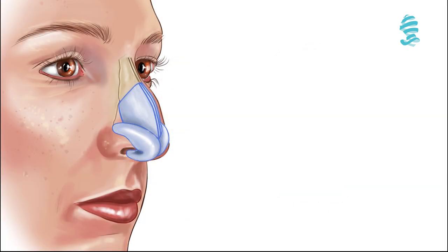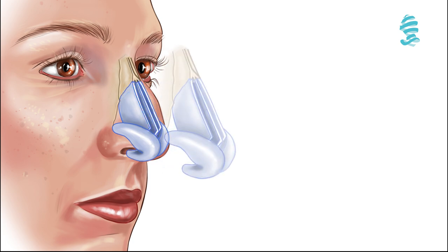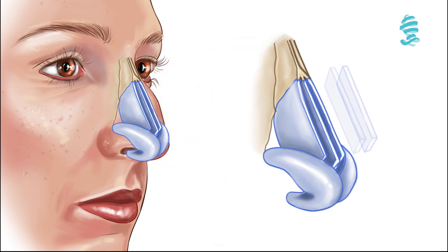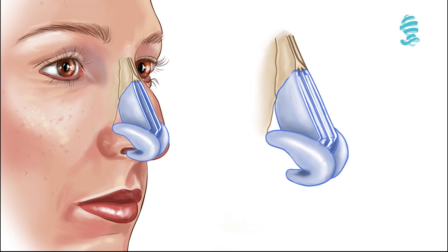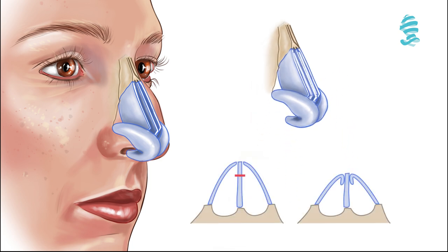After removing the cartilaginous hump, the middle vault can be left as it is. However, many surgeons prefer to use spreader grafts or flaps to restore the middle vault aesthetically and functionally.